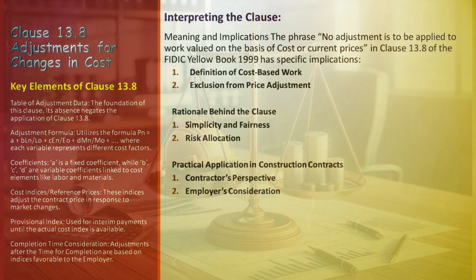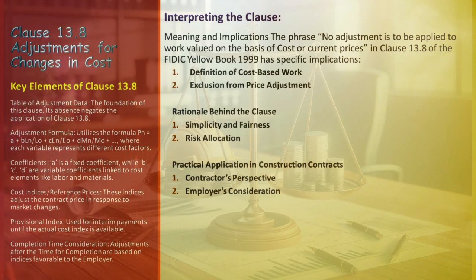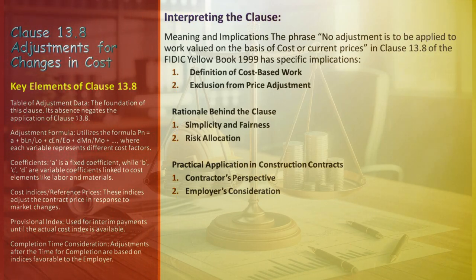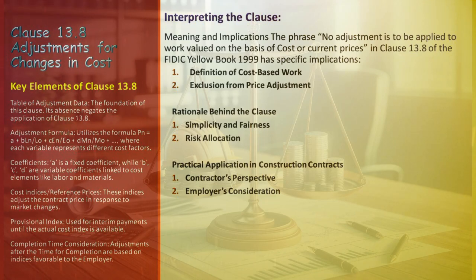Understanding why this clause exists is key. Adjusting costs that are already based on current or actual prices could complicate things and lead to unfair outcomes — since these costs mirror the market price at the time of procurement, further adjustments might result in double-counting the same market fluctuation. This clause also delineates risk allocation: for cost-based work, the risk often falls on the employer, as the contractor is compensated based on actual or current costs. Employers need to remember that for cost-based components, they carry the market risk, and these aspects won't be shielded by the Price Adjustment Clause.